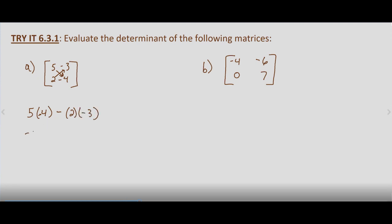That gives us negative 20 minus negative 6, which equals negative 20 plus 6 (minus a negative is plus a positive), so negative 20 plus 6 is negative 14. That would be the determinant of the matrix we're given in part A.